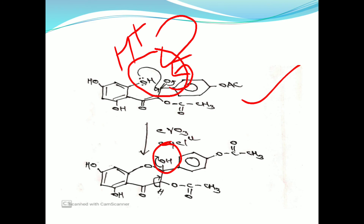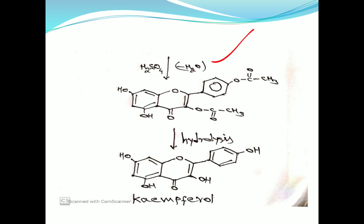This new compound is then treated with concentrated H₂SO₄. We know concentrated H₂SO₄ acts as a strong dehydrating agent, so H₂SO₄ removes a water molecule. As a result, a pi bond is formed between these two carbon atoms.